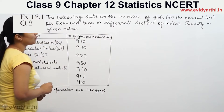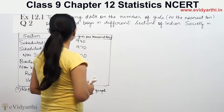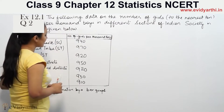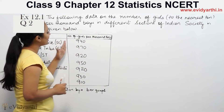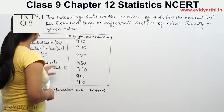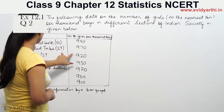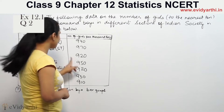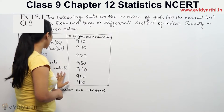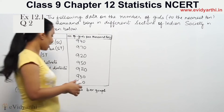So you have the following data on the number of girls per 1000 boys in different sections. The sections and their values are: SC is 943, ST is 970, non-SC/ST is 920, backward districts is 950, non-backward districts is 920, rural is 930, and urban is 910.